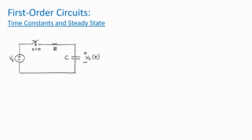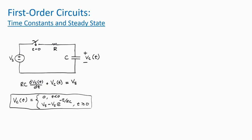In a previous talk, we discussed a way to find the voltage across a capacitor in a first-order RC circuit. We started by using Kirchhoff's current law to write a first-order differential equation. Then we solved the equation and found an expression for the capacitor voltage Vc(t) over all time.